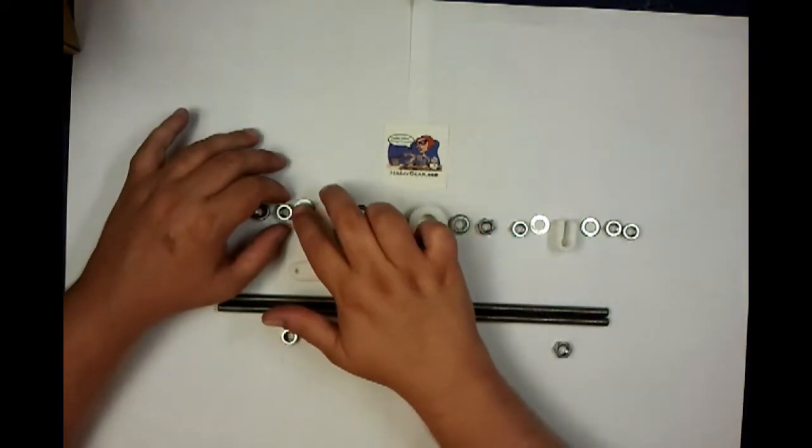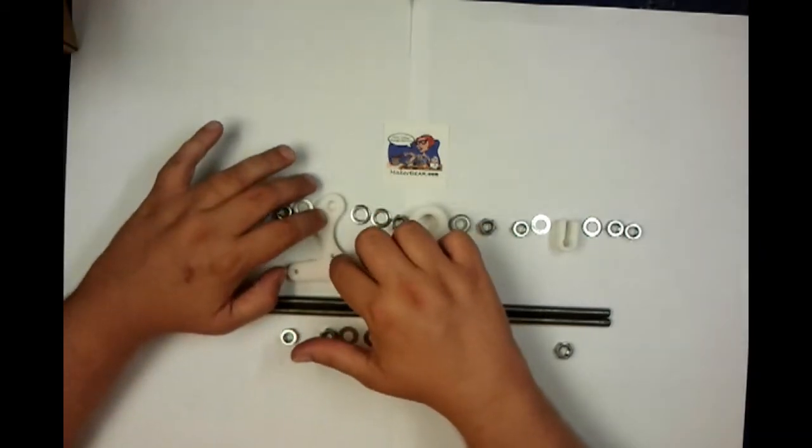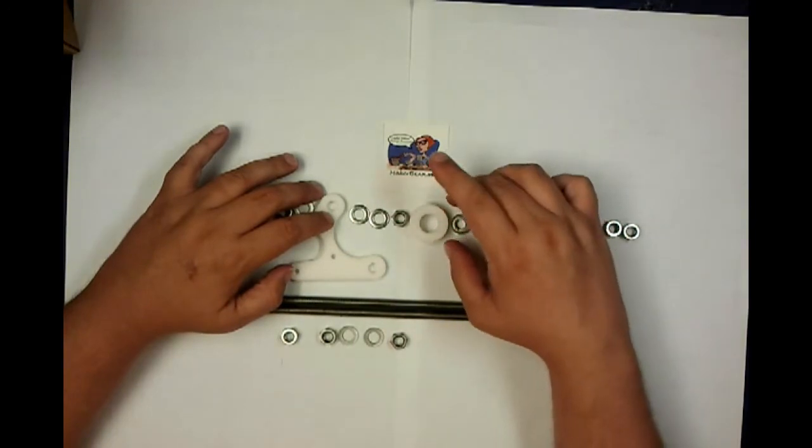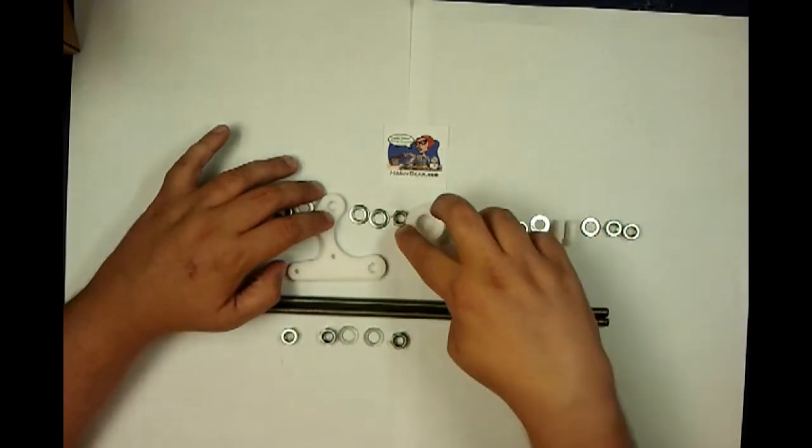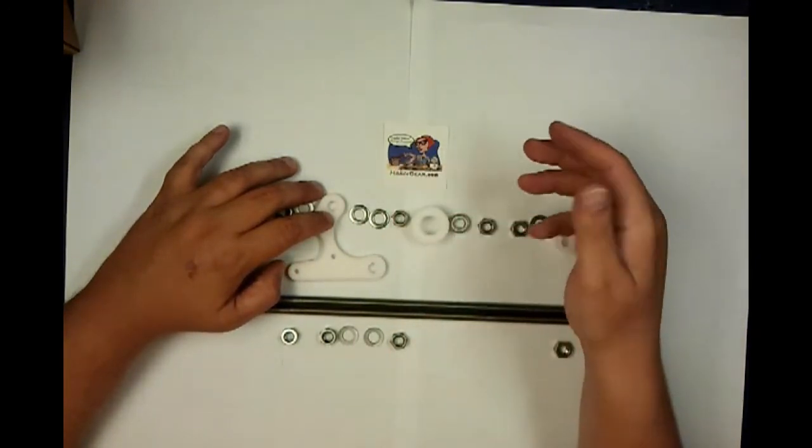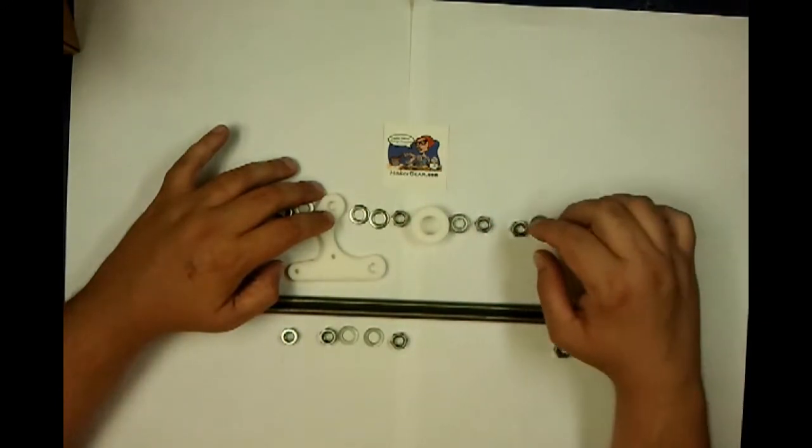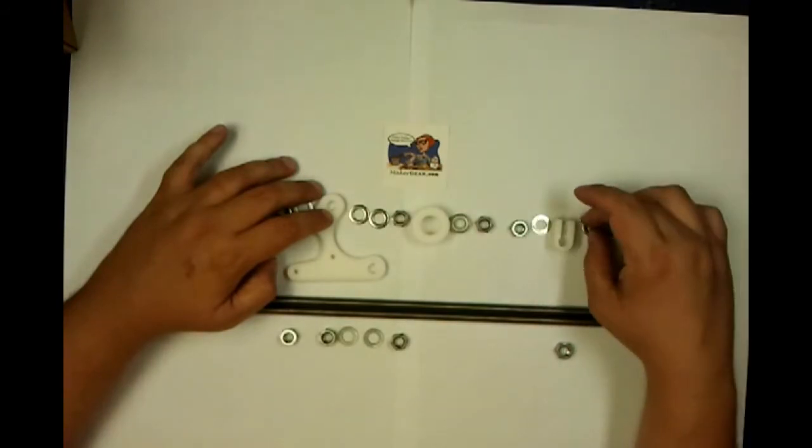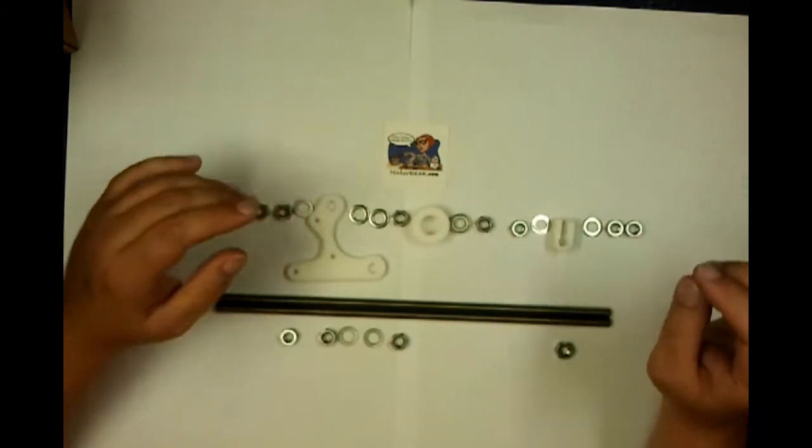Then for the motor, it's going to be nut, washer, your printed part, two washers, a nut, then these two connected, and the nuts directly against the bearing, which is different than normal for assembly, then nut, washer, printed clamp, washer, nut, and then one nut for the frame.